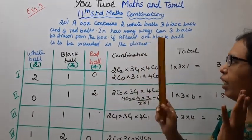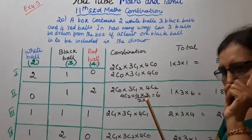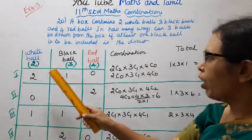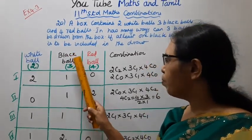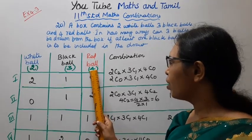We need to draw 3 balls total, but the condition is at least one black ball must be included. White balls: 2, black balls: 3, red balls: 4.